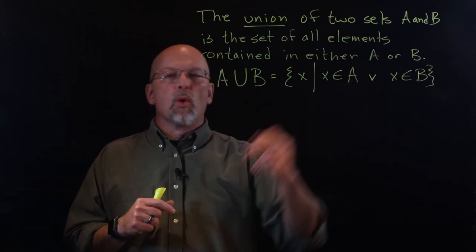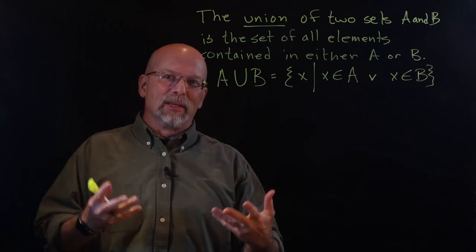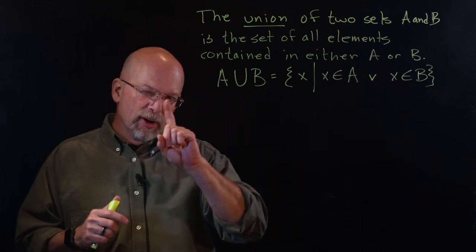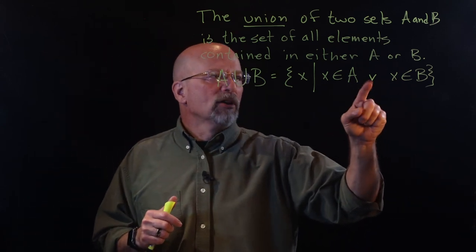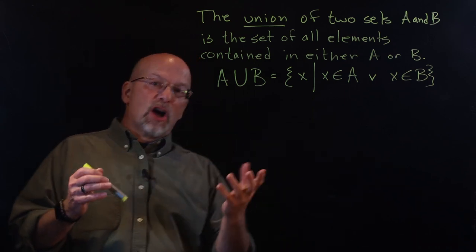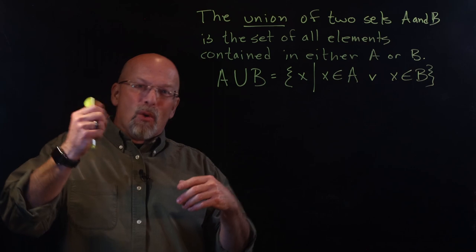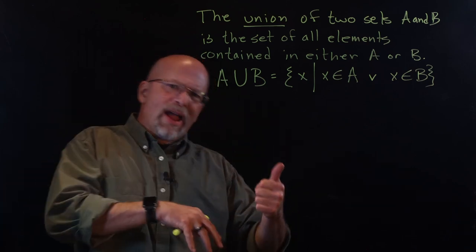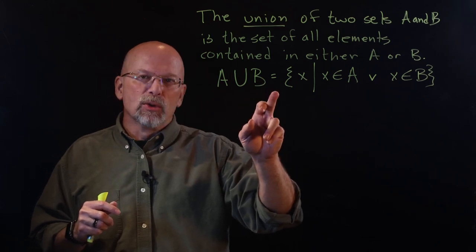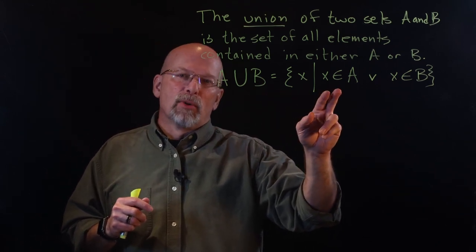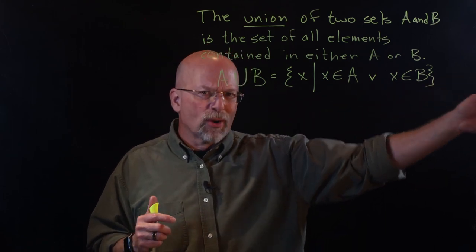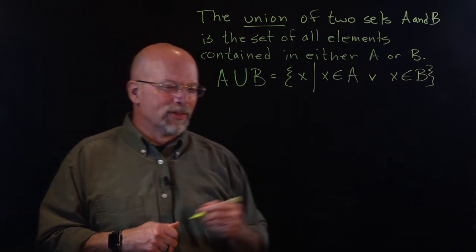We'll talk more about this or and what it actually means whenever we get into Boolean operations and truth tables. But for now, that little v represents the or operation. Whenever I talked about all the grayscale colors — white or black or gray or silver — we have the set grayscale equal to any element that is a member of white or black or gray or silver or dark gray, and so forth. That would be an example of the union.